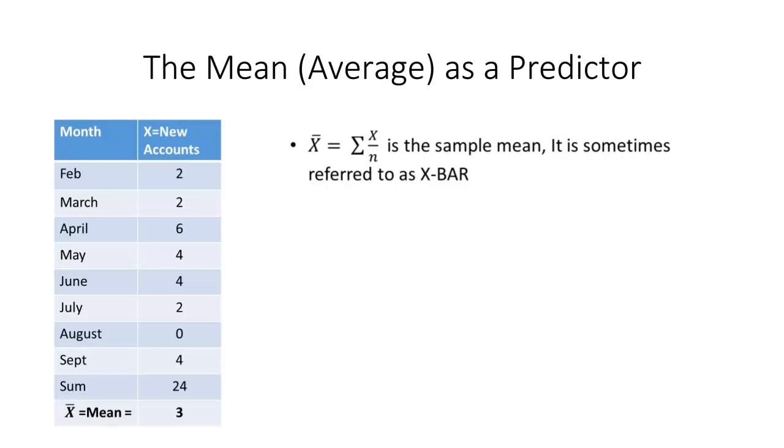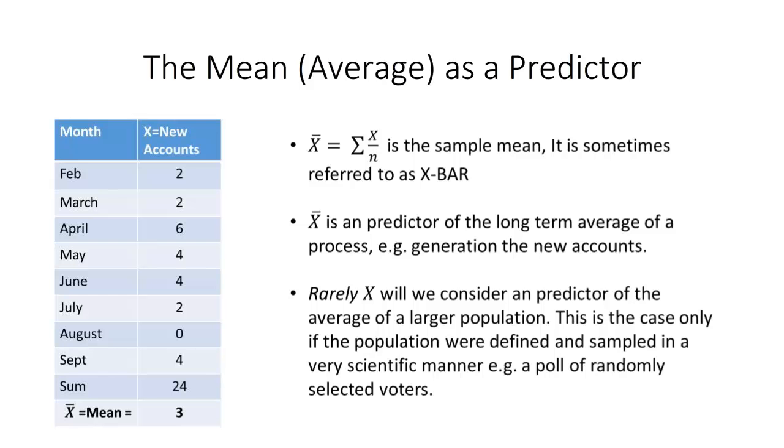X-bar is another name for the mean. We want you to think of it in the context of a process. In this particular example, the process is generating new accounts. X-bar is a predictor of the long-term average for that process, and it's based on the sample of data that we happen to have available. We usually are not considering our sample and our mean as being representative of some larger population. So we are not making inferences about a population, for example, the population of likely voters or the population of people who drink coffee. For those of you who've had statistics before, that was probably the exclusive focus of the course. That will not be the case in this course.